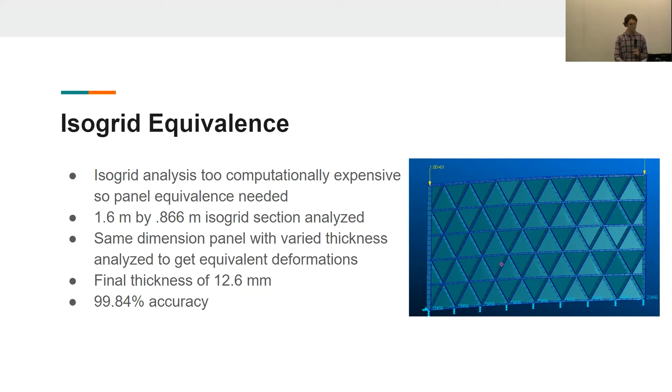The final panel thickness for the equivalence panel was 12.6 millimeters, and this comes out to be a 99.84% accuracy between the deformations of the two different sections.